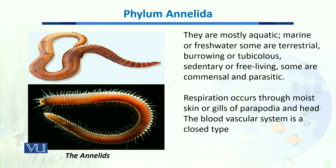Annelids are mostly aquatic — marine or freshwater — while some organisms of this phylum are terrestrial and burrow inside soft soil. They can be sedentary or free-living, and some can be commensals or parasitic.